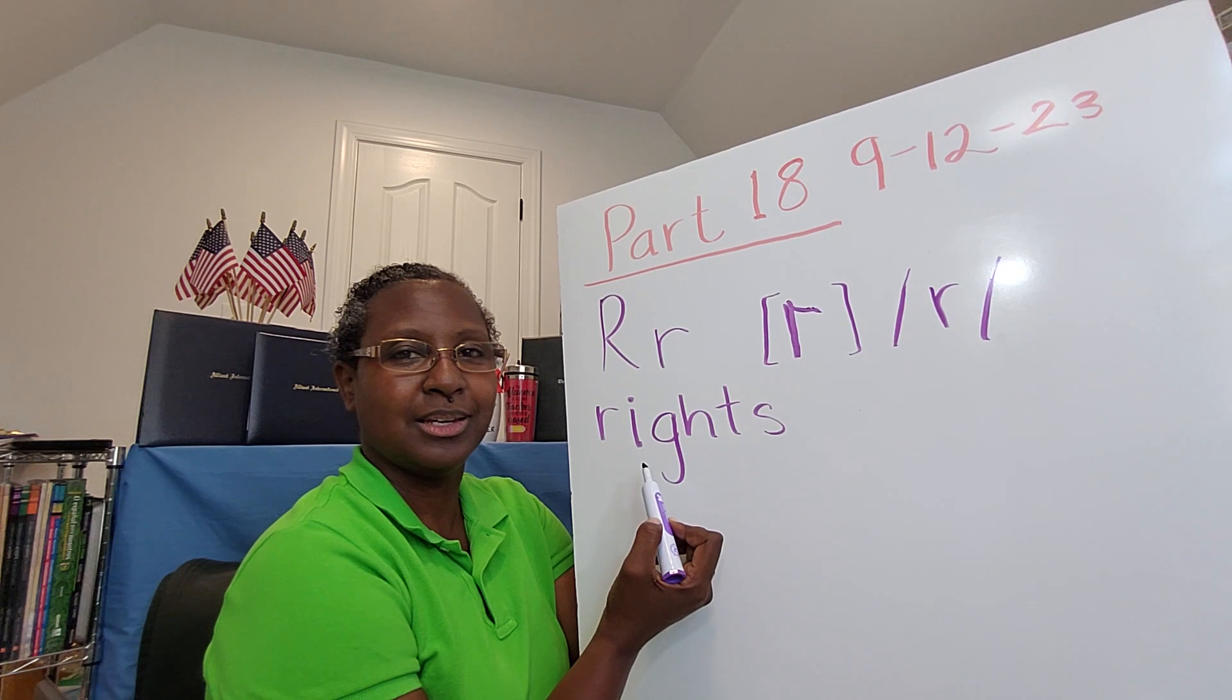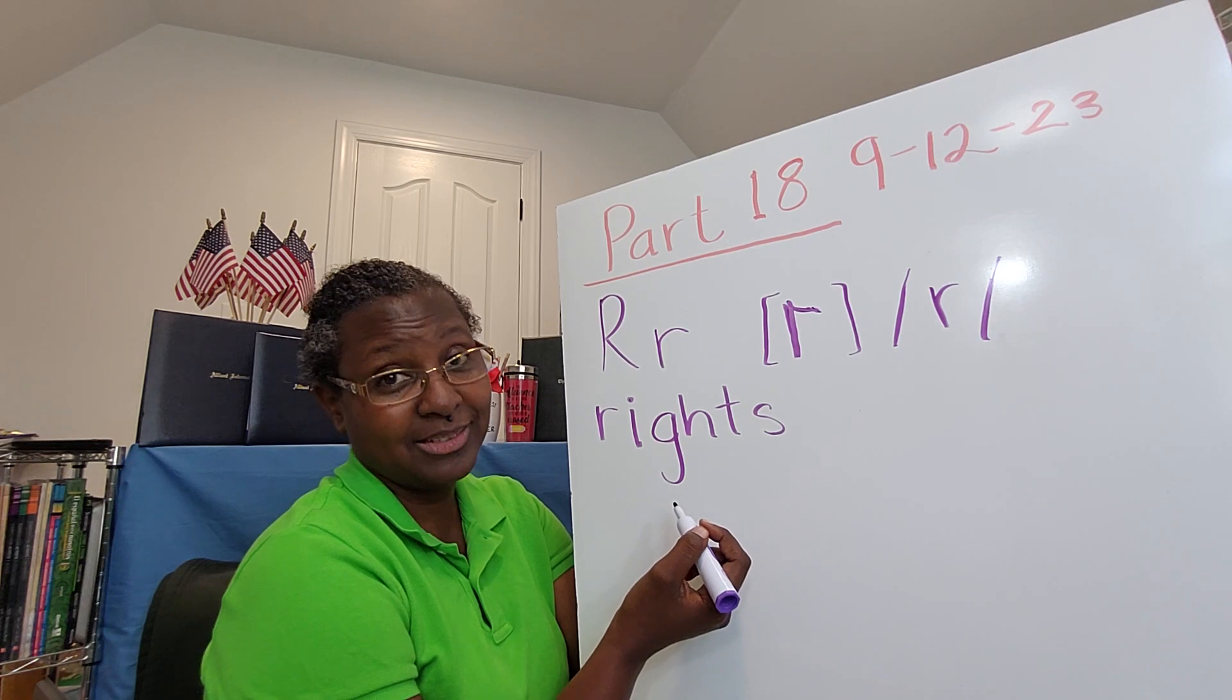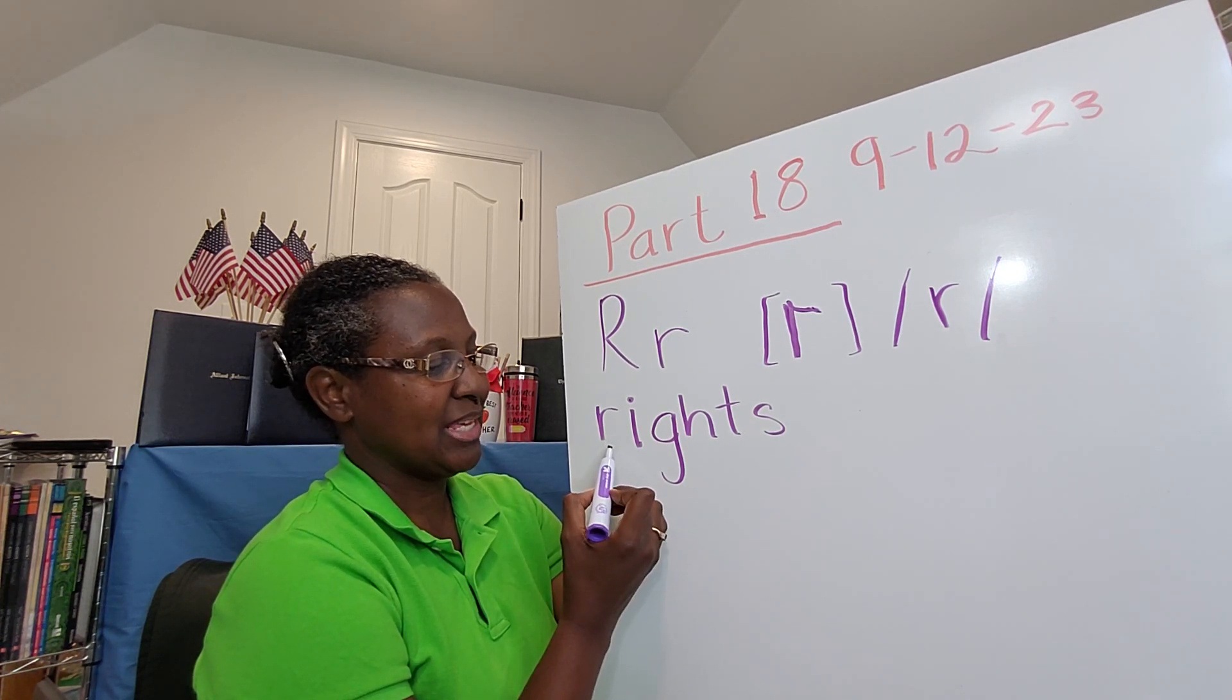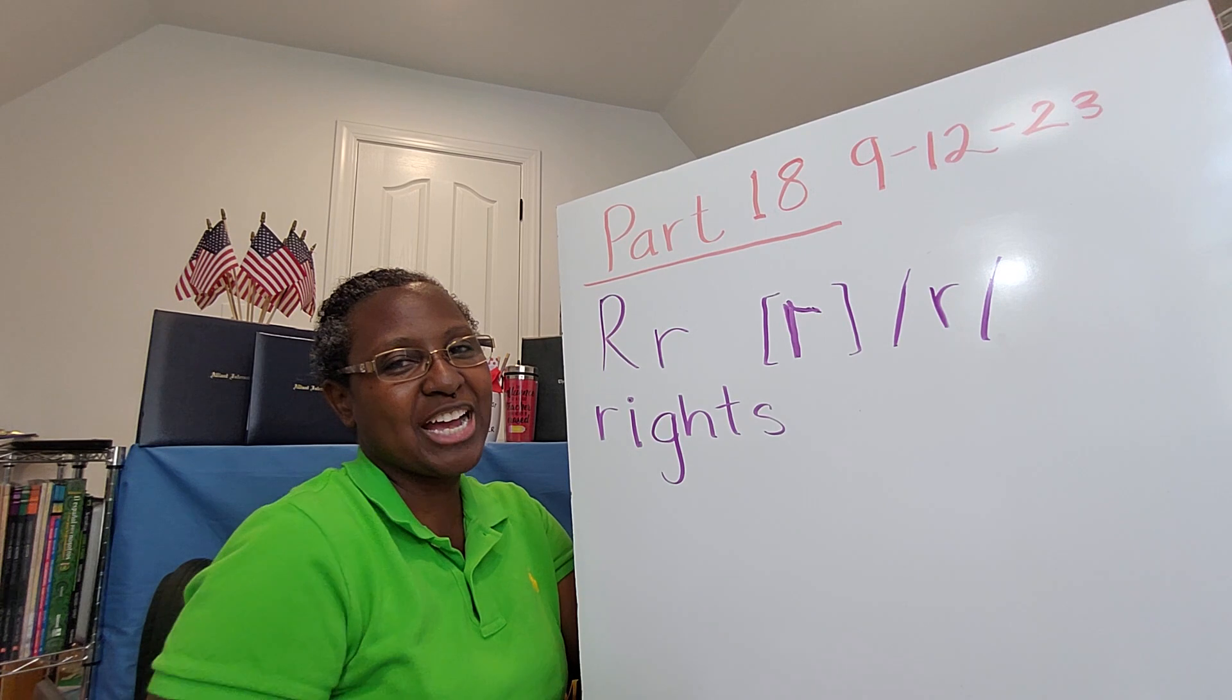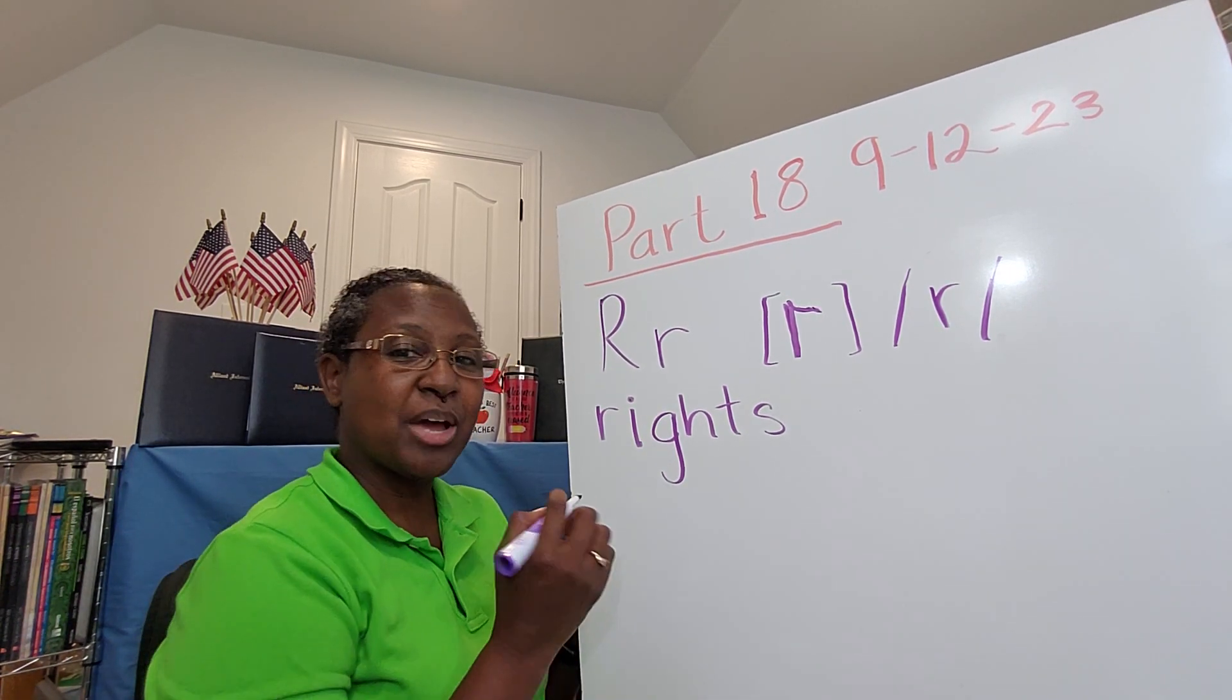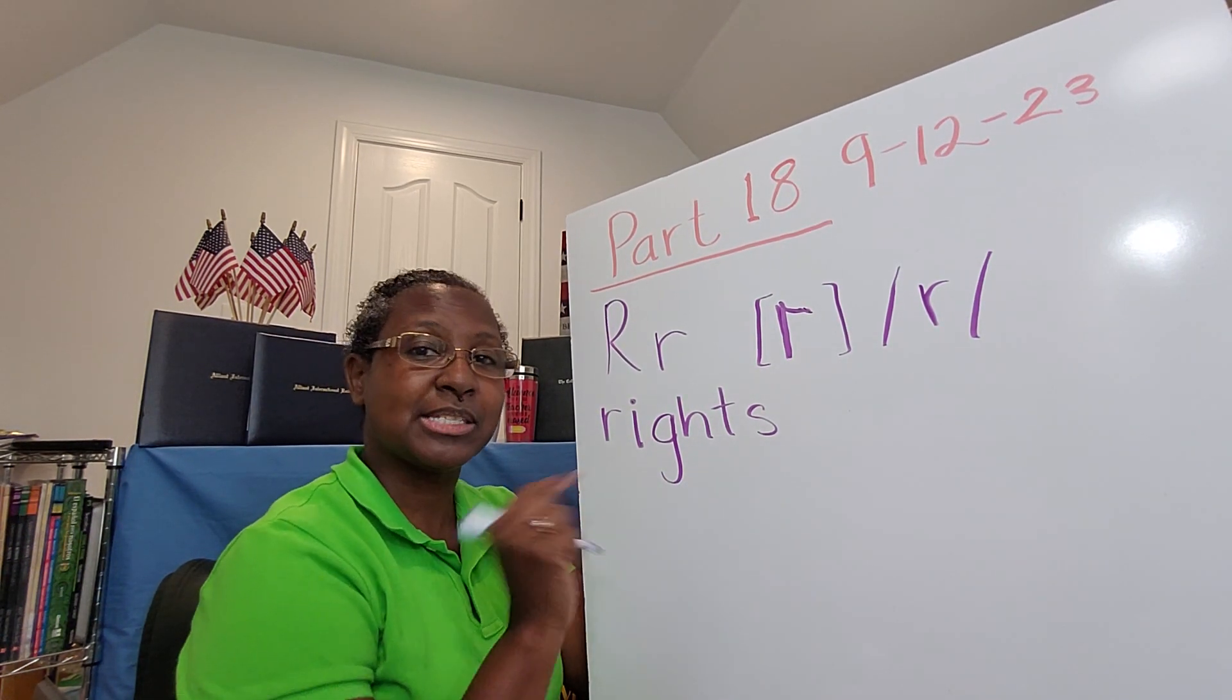What about G-H, shouldn't those make some type of sound too? Well, they're silent. The way we say this word is just rights, as if the G and the H were not there, and we make that the long I sound. So now when you go to your test, you understand when you see R-I-G-H-T-S, you must say rights.